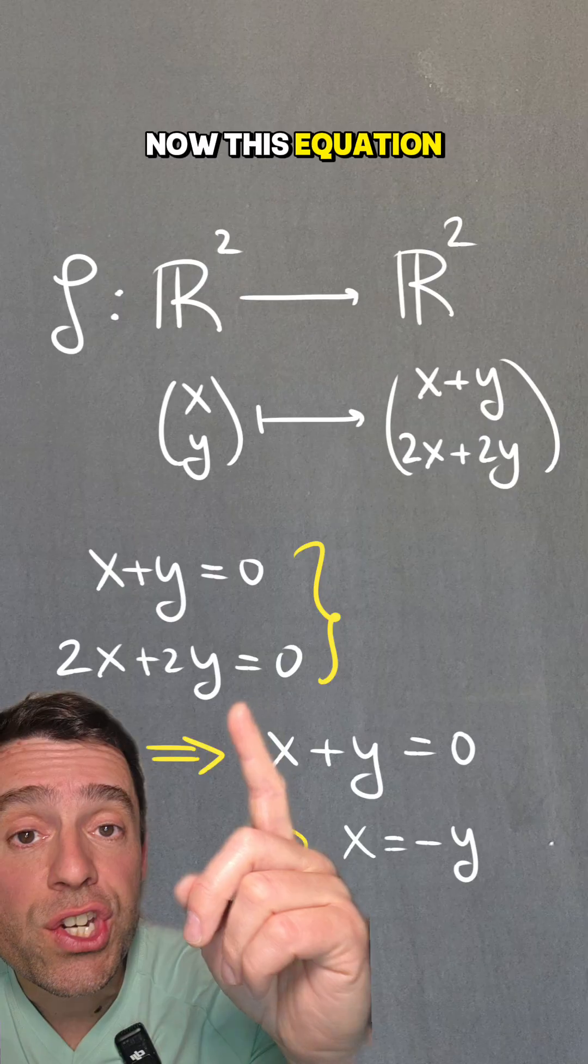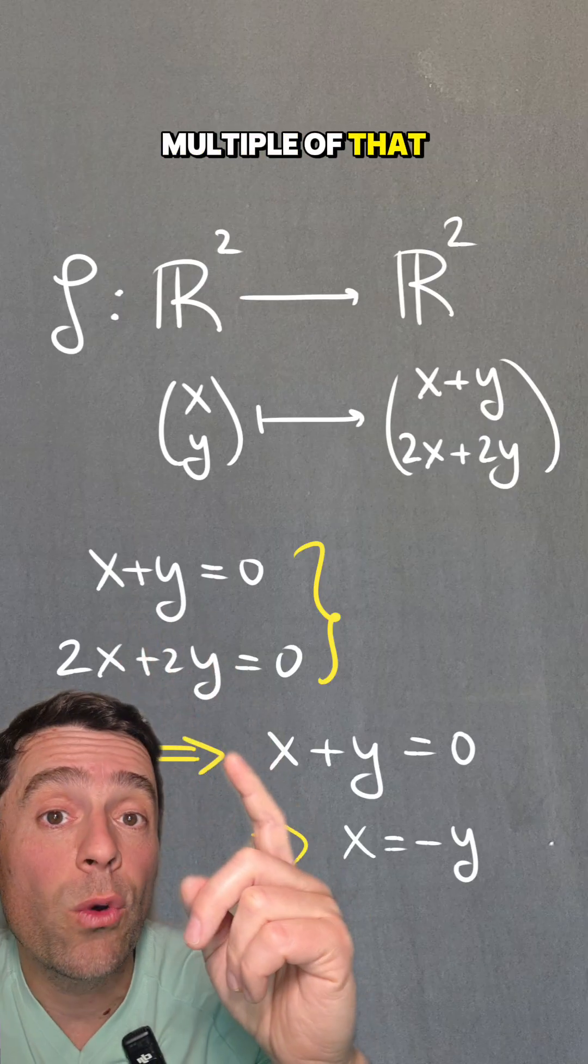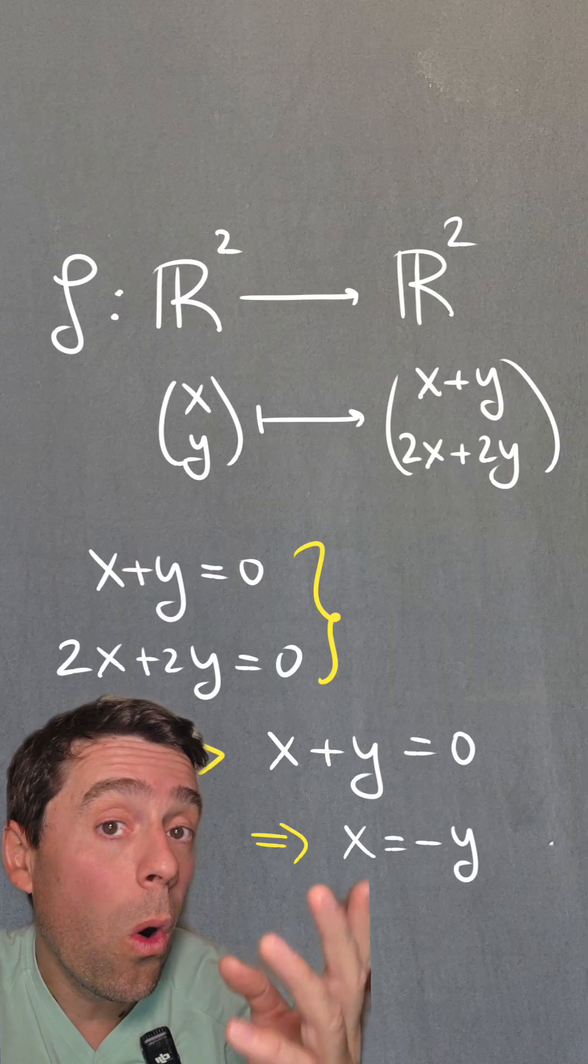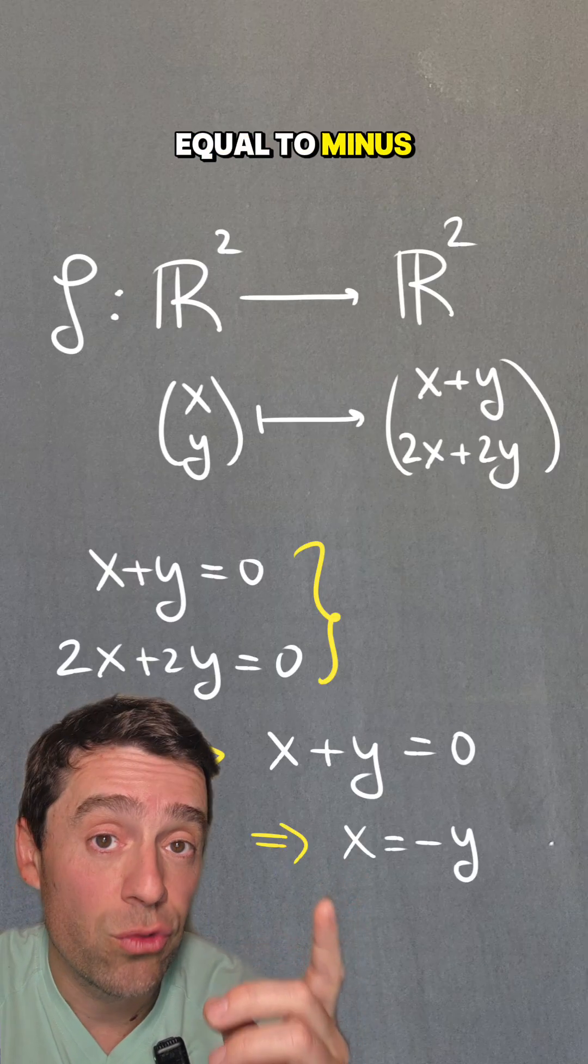Now, this equation is just a multiple of that equation, so this system is equivalent to just x+y equals 0, or x is equal to minus y.